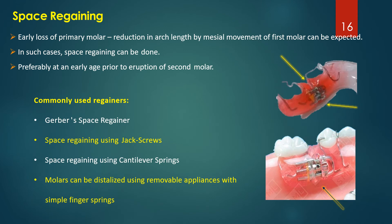Space regaining is needed when there is early loss of a primary molar, which results in reduction of arch length by mesial movement of the first molar. Space regaining is preferable at an early age, prior to eruption of the second molar. Commonly used regainers include Gerber's space regainer, space regaining using jack screws, and cantilever springs. Molars can also be distalized using removable appliances with simple finger springs.